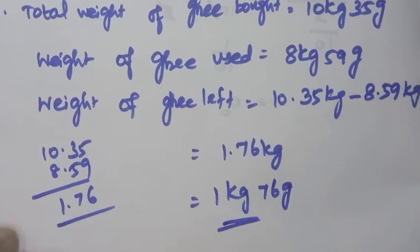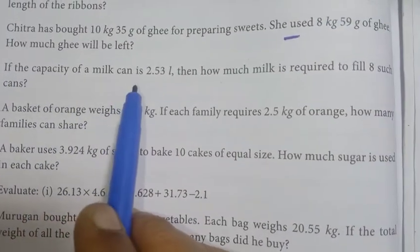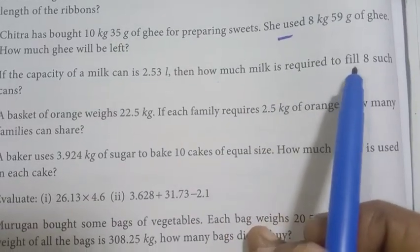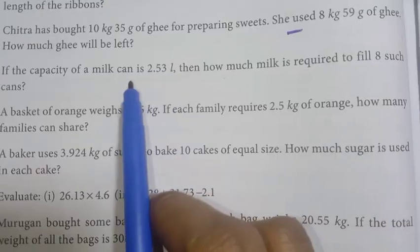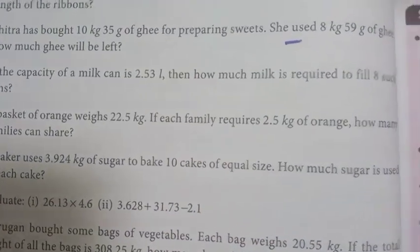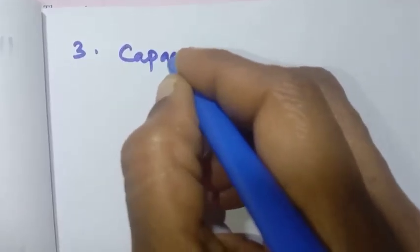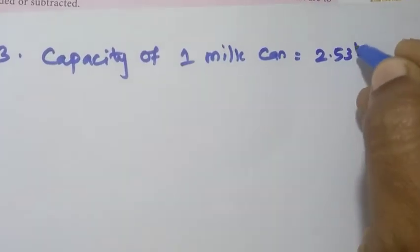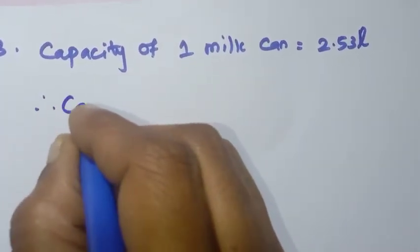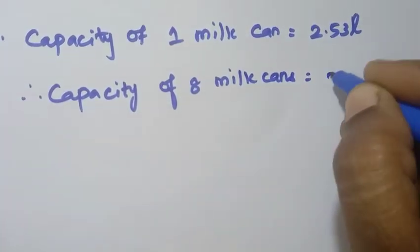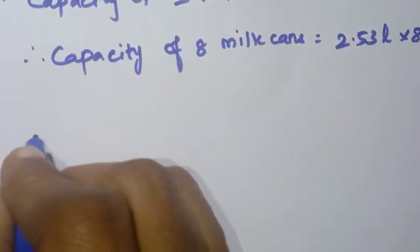Third question: If the capacity of a milk can is 2.53 litres, how much milk is required to fill 8 such cans? The capacity of one milk can is 2.53 litres. Therefore, for 8 milk cans we calculate 2.53 litres multiplied by 8.